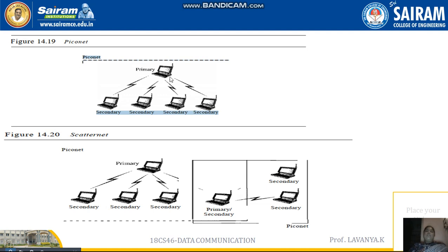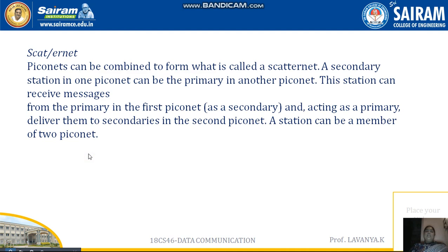In the Piconet, the primary device is the root device — it handles all transactions, and all secondary devices interact based on it. The Scatternet is formed when multiple Piconets are combined into a Bluetooth network. All Piconet networks combine together in the Bluetooth network, which we call a Scatternet. In a Scatternet, the secondary station of one Piconet can act as the primary of another Piconet.